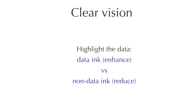Now let's have a look at the construction of tables. In this section I have to thank Stephen Few, who wrote a great book about graphs and is the first author to also talk about tables. As with graphs, it's about clear vision and clear understanding. Clear vision is about highlighting the data — enhancing what is called data ink, the pixels that contain information — versus reducing the non-data ink, the pixels that contain supporting information necessary to understand your data.